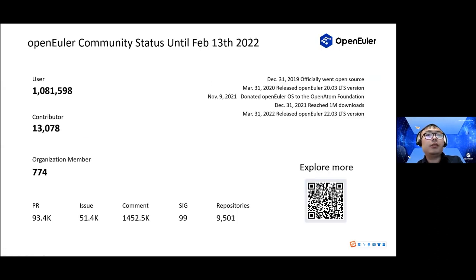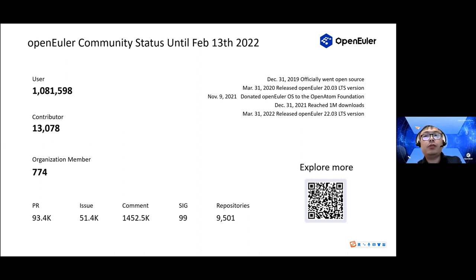After more than three years, OpenEuler has grown to a vibrant community. In China, OpenEuler is the number one open OS community. Some statistics: over one million users have downloaded OpenEuler images, more than 13,000 contributors, almost 800 organization members, 99 SIGs, and over 9,500 repos with lots of PRs, issues, and comments. These numbers are updated every day. However, compared with other worldwide communities like Debian and Red Hat, OpenEuler is still very young and has a lot of work to do to fulfill its goals.